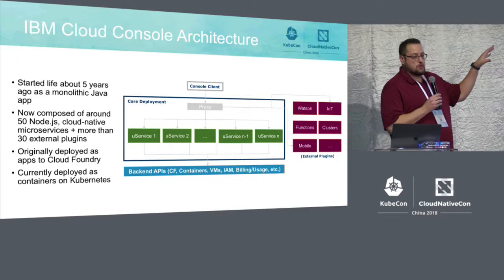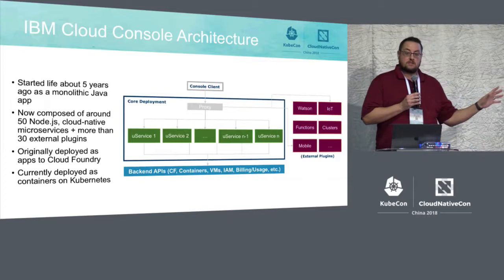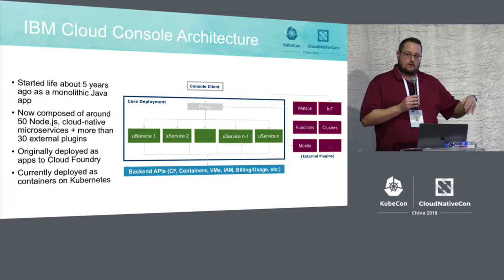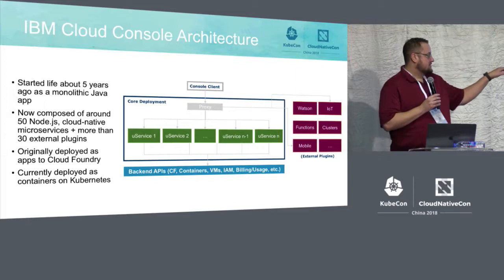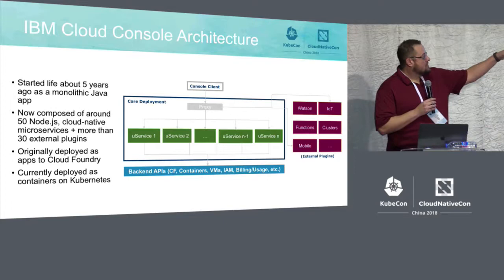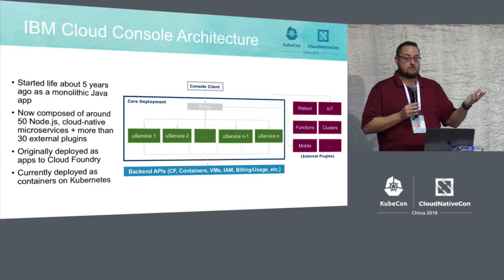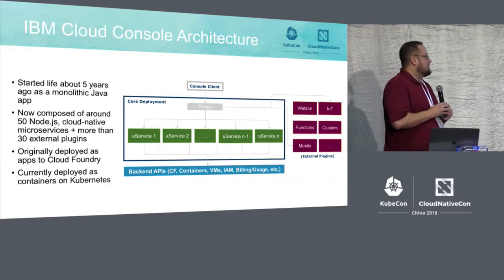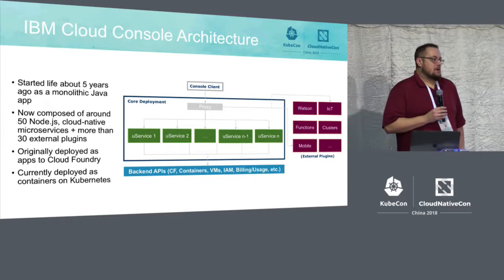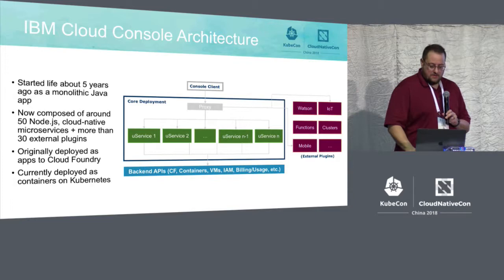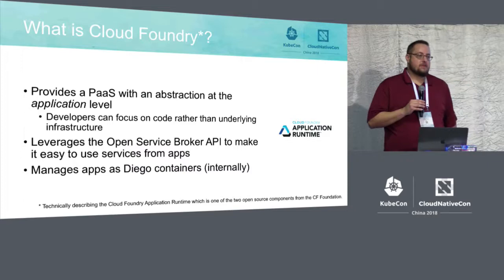The diagram basically shows the console client — the browser — makes a connection into our reverse proxy, which does all the routing to our different microservices. So slash catalog would go to our catalog microservice, for example. All these microservices talk to backend APIs from IBM Cloud. Our proxy also routes through to a number of other teams outside of my core console team, so we end up with a pretty large, loosely coupled experience. This system was originally deployed as microservices to Cloud Foundry, but now we're deployed to Kubernetes — that's really the topic of this discussion.